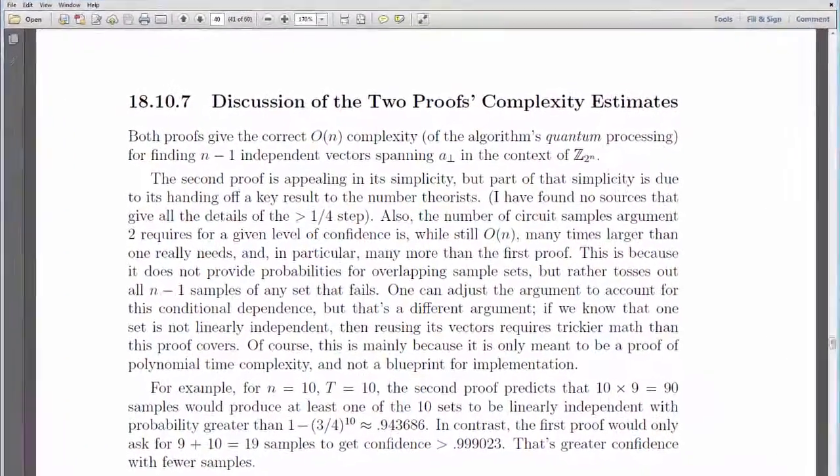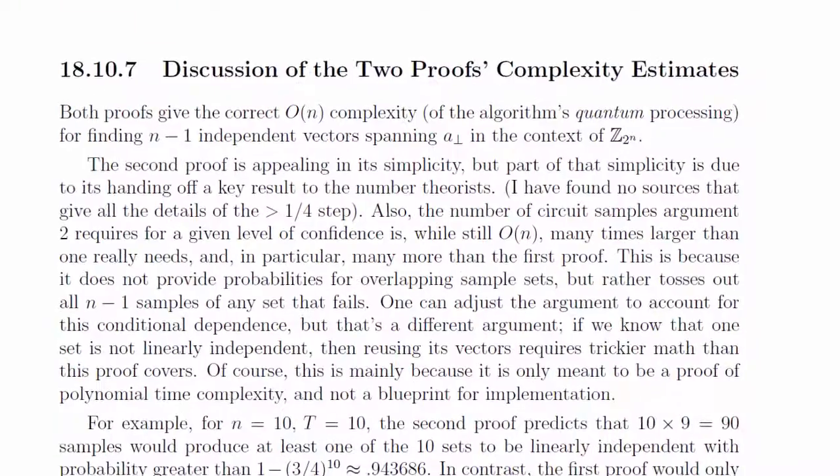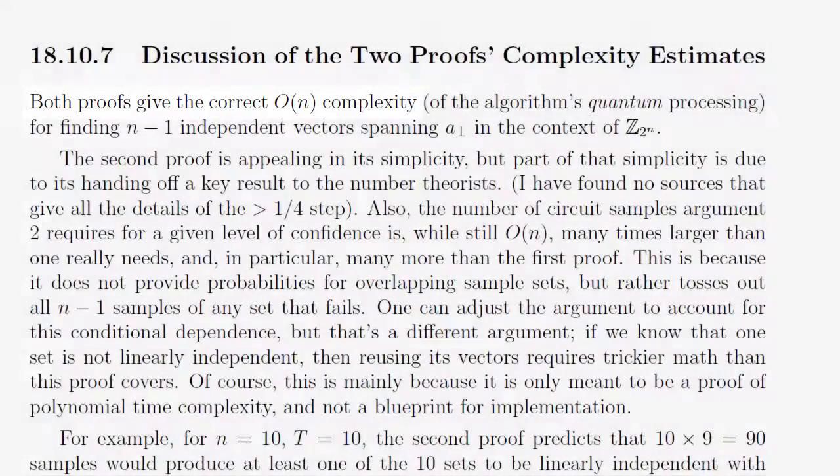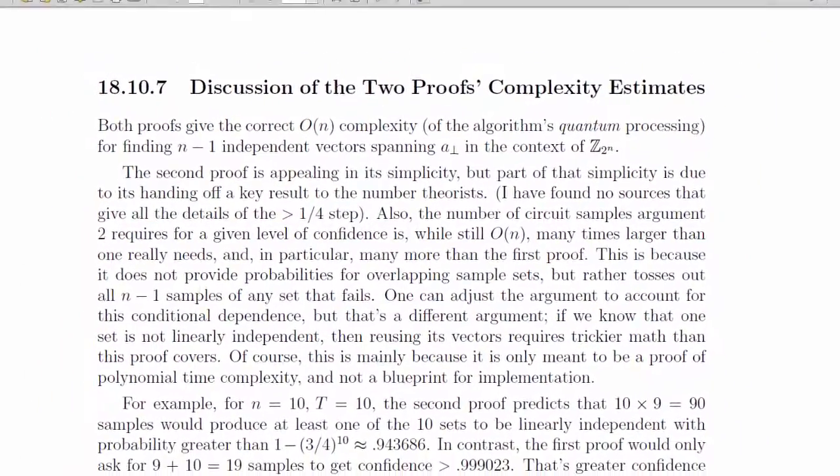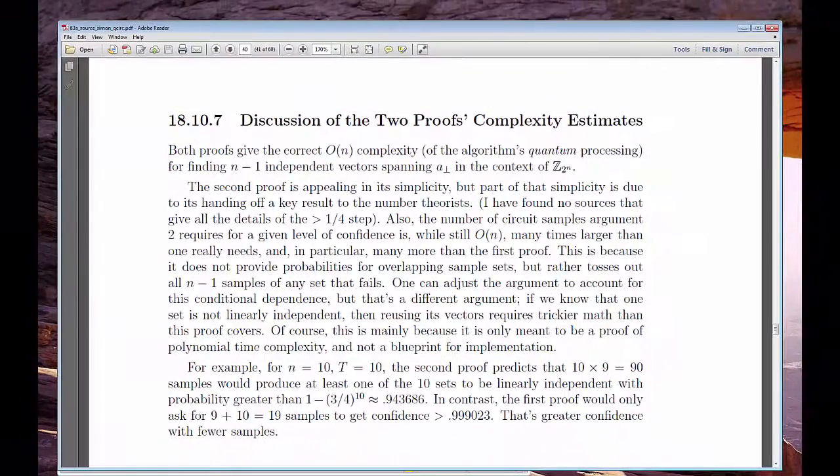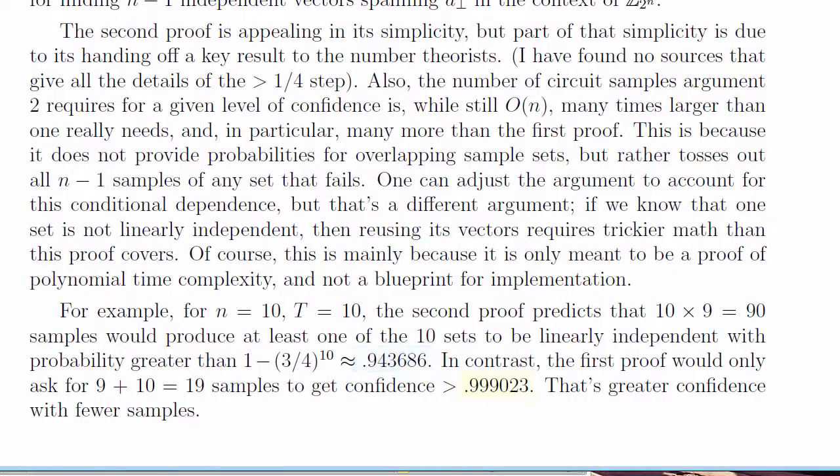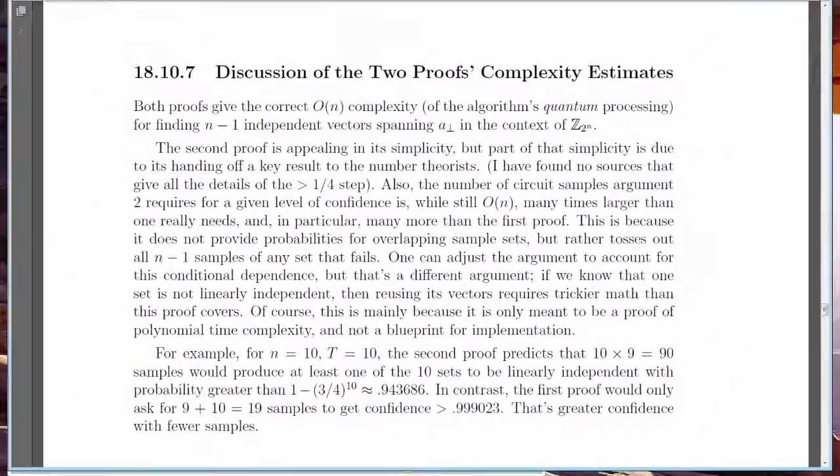That last criticism doesn't matter too much, though, because the algorithm will find the period A with the same likelihood of error based on nature, not on how we humans decided to analyze the math behind the circuit. Still, it's nice to be able to predict the convergence of algorithms accurately, which is one of the reasons I like the first argument better.